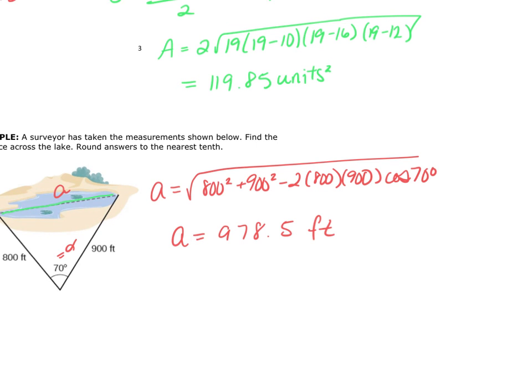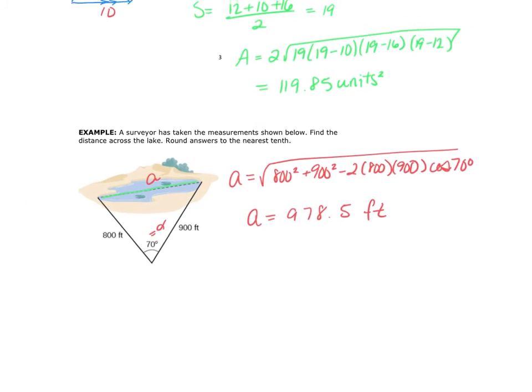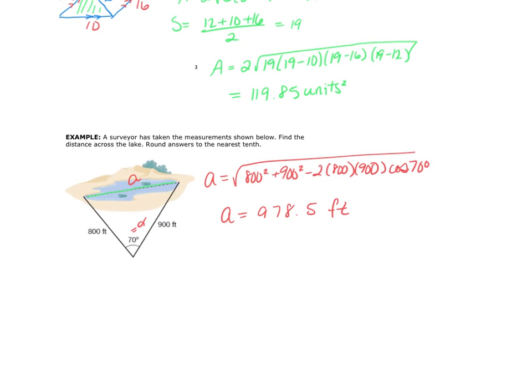And that's the Law of Cosines. So now that you've learned the Law of Sines, the Law of Cosines, Heron's Formula, as well as the area using the sine formula, you can approach any triangle — and it doesn't have to be a right triangle. Thank you.